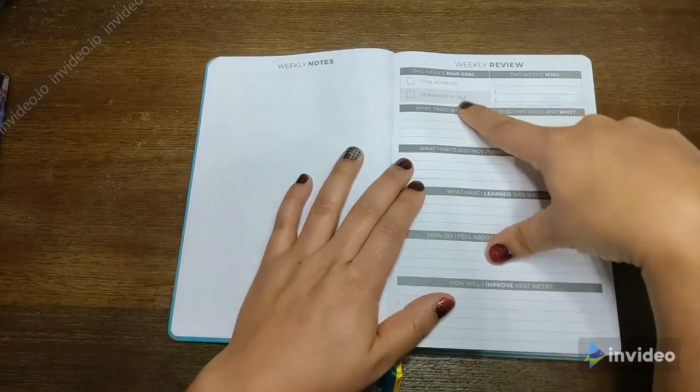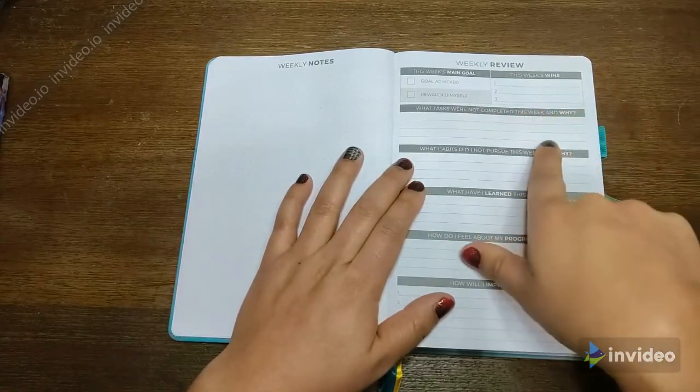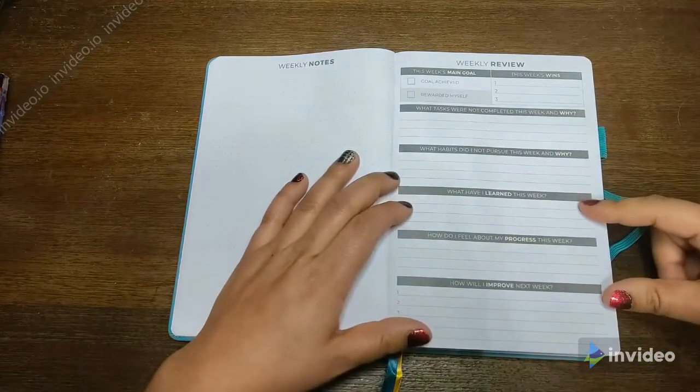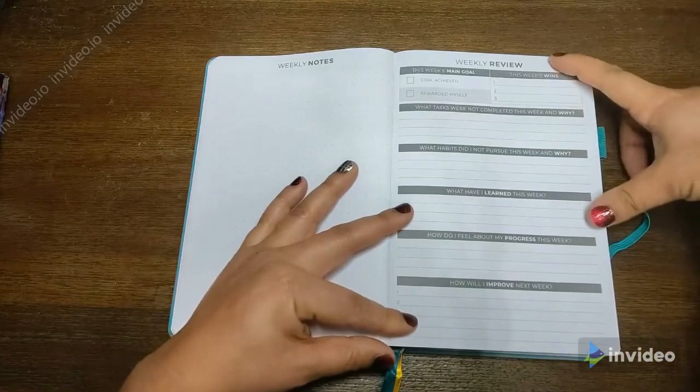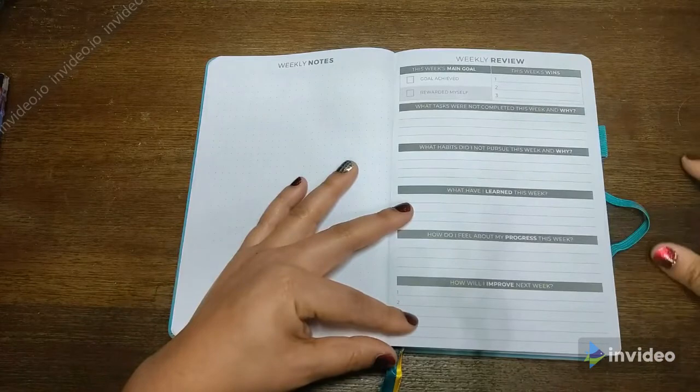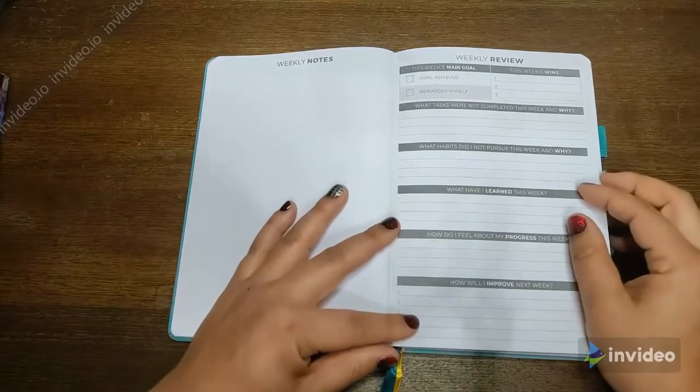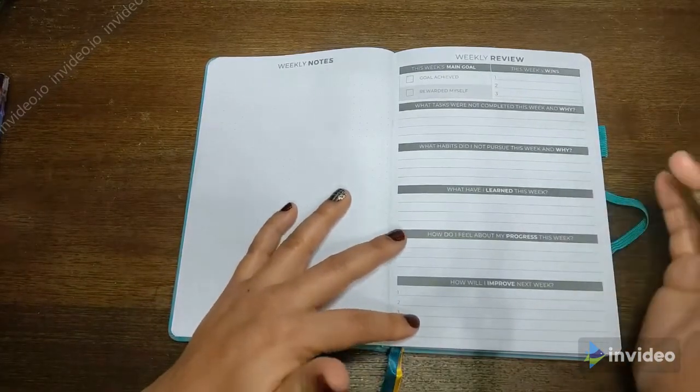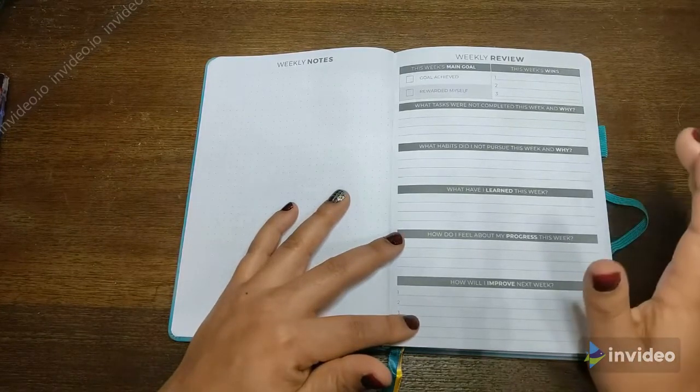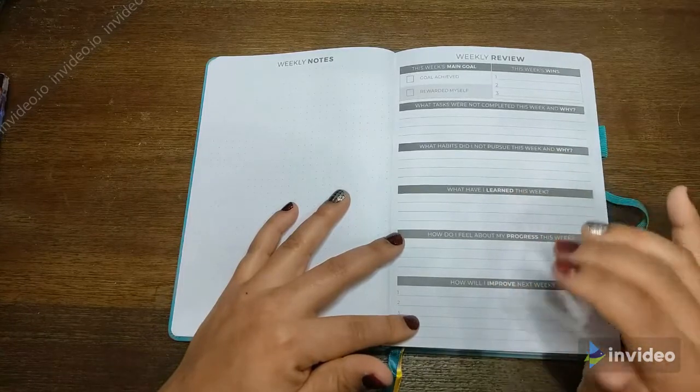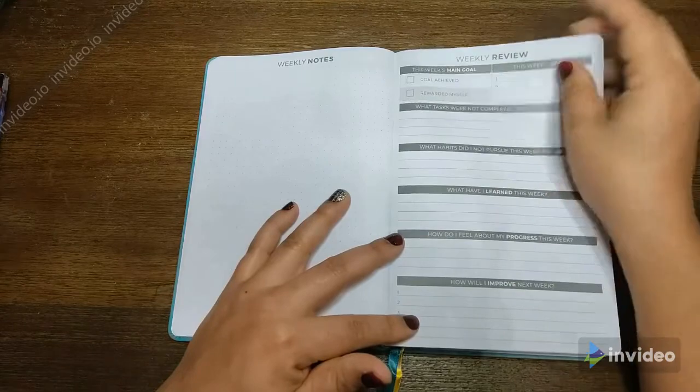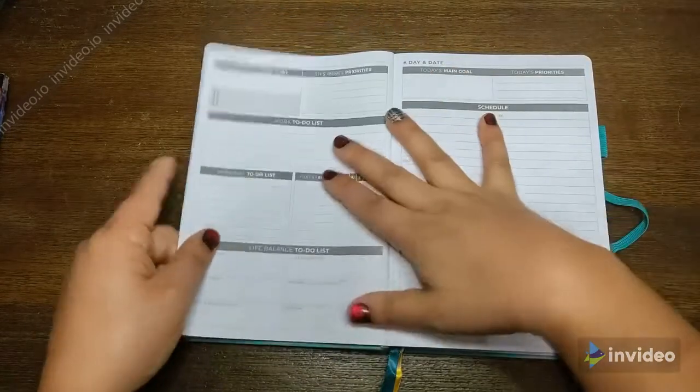This is the thing I was really excited about, the weekly review. Was my goal achieved, what were my wins, what did I not complete and why, what habits did I not pursue, what have I learned, how do I feel about my progress, and how will I improve. I watched a lot of great YouTube videos about this whole concept of a weekly review and I was trying to implement it in a bullet journal sort of method and it just wasn't working. I need a combination of structure and flexibility. For me, I'm busy, this has everything that I need it seems like and I'll be able to maybe be more productive.